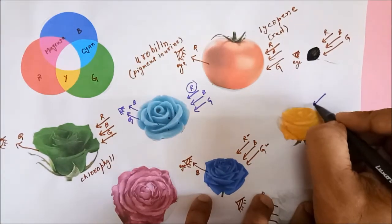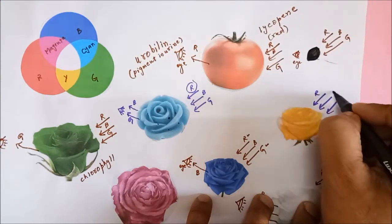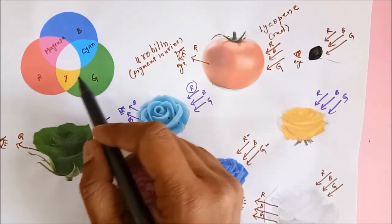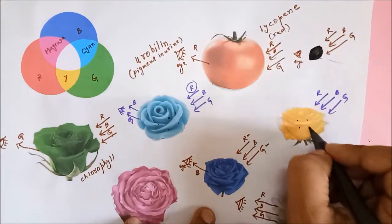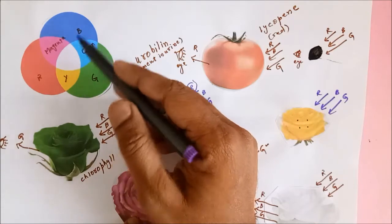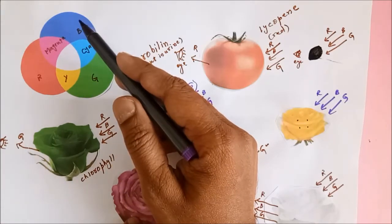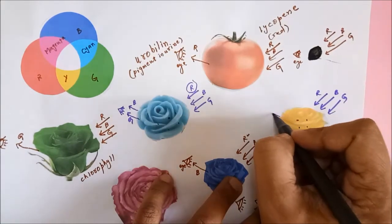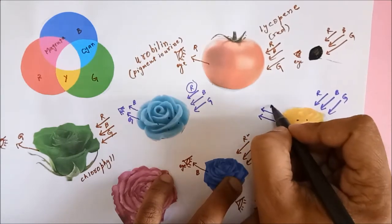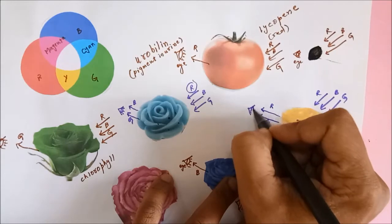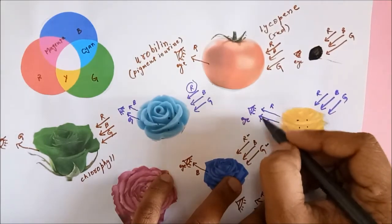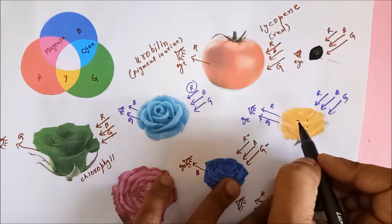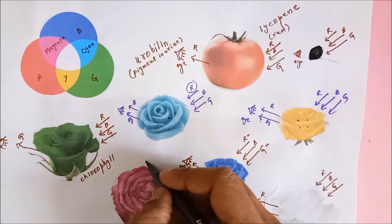Now let us analyze why the yellow rose appears yellow in white light. This is again white light made up of red, blue, and green. Yellow is made up of red and green, so the pigments in the yellow rose actually absorb blue light, which is complementary to it. The blue light will be absent in the reflected light, so red and green reach your eye. In the midway, red and green combine together to form yellow light, and that's why you see the yellow color of the rose.